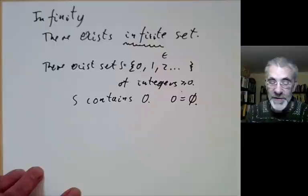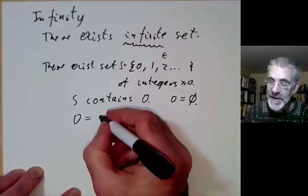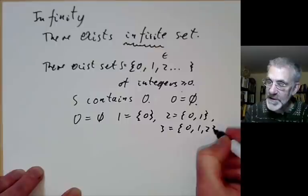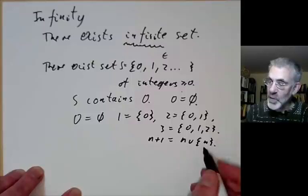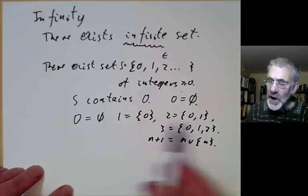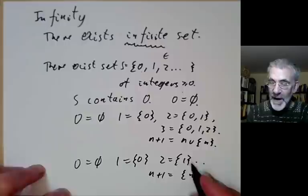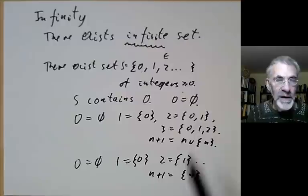What do we mean by 'plus 1'? One way of encoding the integers is to say 0 is the empty set, 1 is the set just containing 0, 2 is the set just containing 0 and 1, 3 is the set just containing 0, 1, and 2, and so on. In general, n+1 is the set n union {n}. That's not the only way of encoding the integers. We could say 0 is the empty set, 1 is the set containing 0, 2 is the set just containing 1, and in general n+1 is the set just containing n.